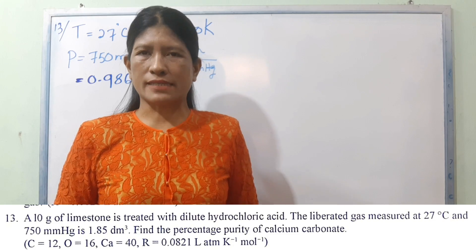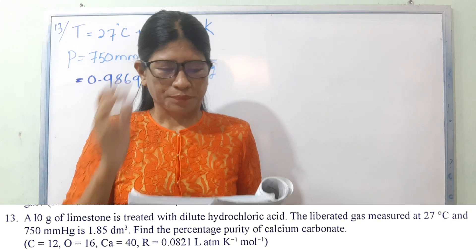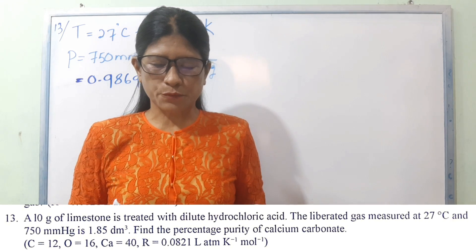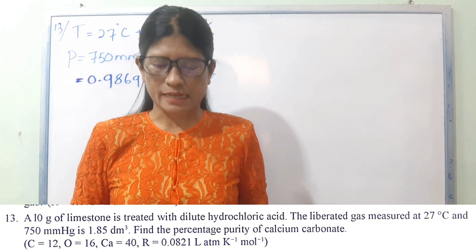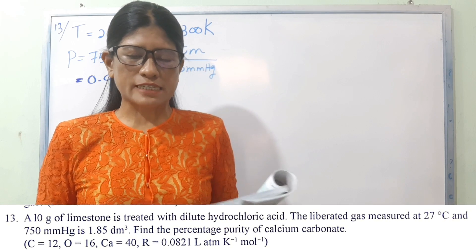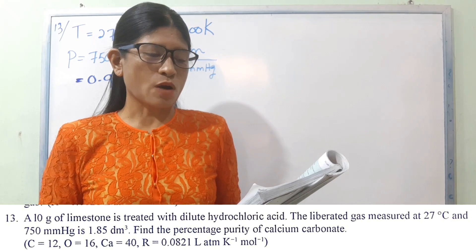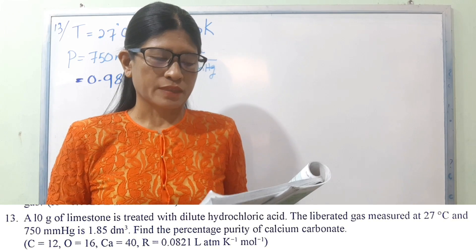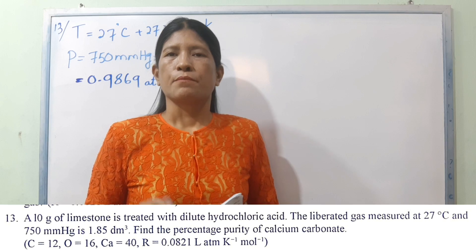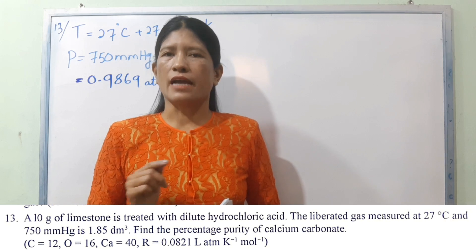The approximate molecular mass is equal to 28 AMU. Next problem: a sample of limestone is treated with dilute hydrochloric acid. The gas collected is measured at 27 degrees Celsius and 750 mm mercury, with a volume of 1.85 dm³. Find the percentage purity of calcium carbonate.